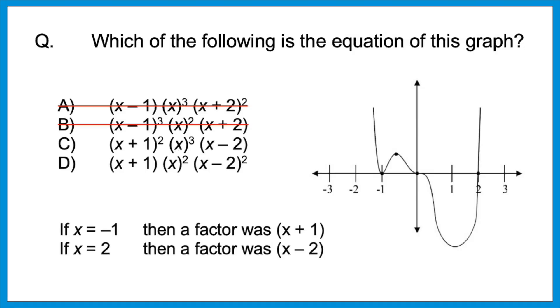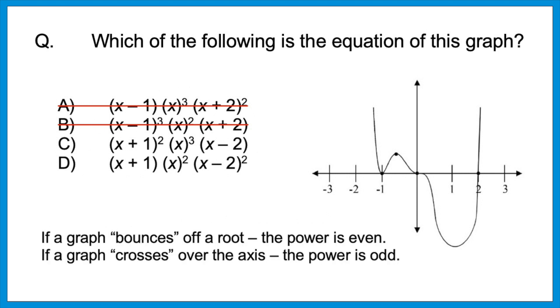Now let's narrow it down between C and D. Look at what happens at the roots of negative 1 and 2. At negative 1, the graph is bouncing off the axis — it reflects but doesn't cross over. At 2, the opposite happens — the graph crosses from a negative y value into a positive y value. That tells us something about the powers. If a graph bounces off a root, the power is even. If the graph crosses over the axis, the power is odd. So C is the only one that works: at the root of negative 1, the power is 2 (even), so it bounces. At the root of 2 — (x − 2) with no written exponent — the power is technically 1 (odd), so the graph crosses over the axis.